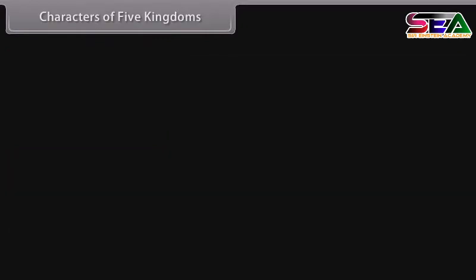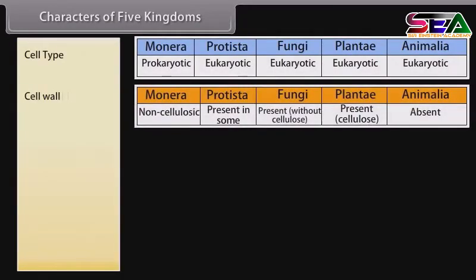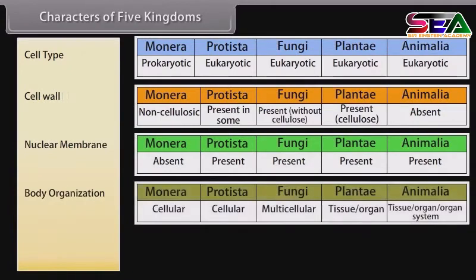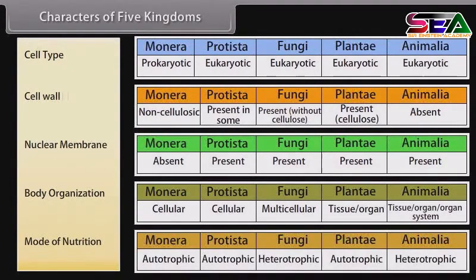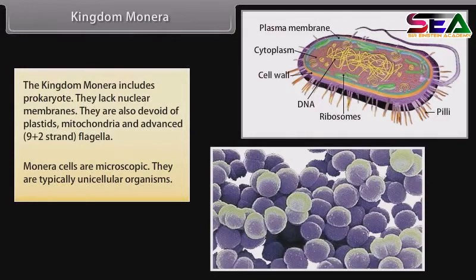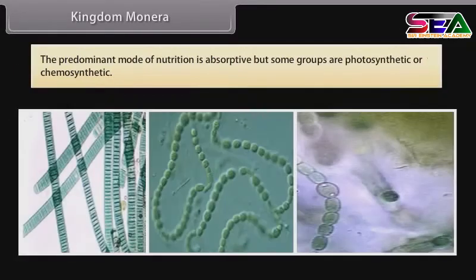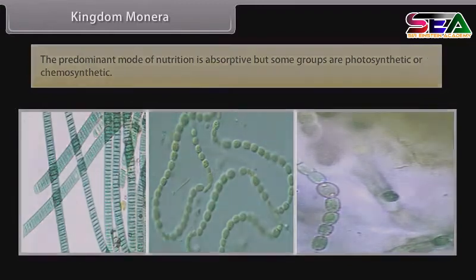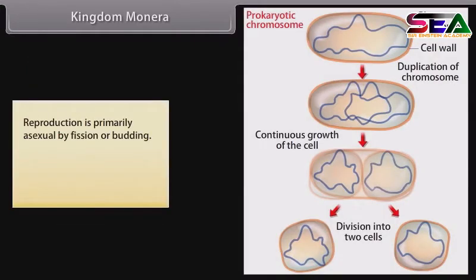Characters of Five Kingdoms include: cell type, cell wall, nuclear membrane, body organization, and mode of nutrition. Kingdom Monera includes prokaryotes. They lack nuclear membranes and are devoid of plastids, mitochondria, and advanced 9+2 strand flagella. Monera cells are microscopic and typically unicellular. The predominant mode of nutrition is absorptive, but some groups are photosynthetic or chemosynthetic. Reproduction is primarily asexual by fission or budding. Protosexual phenomena also occur.